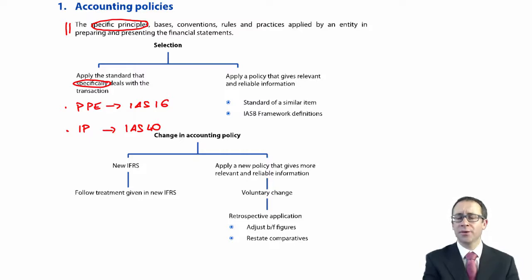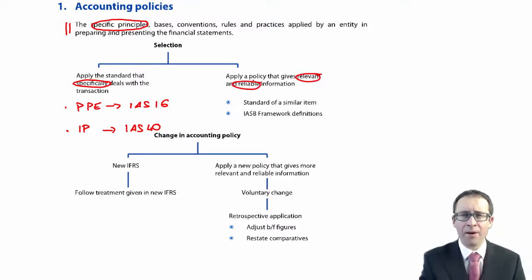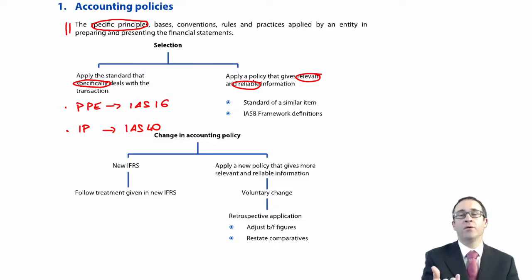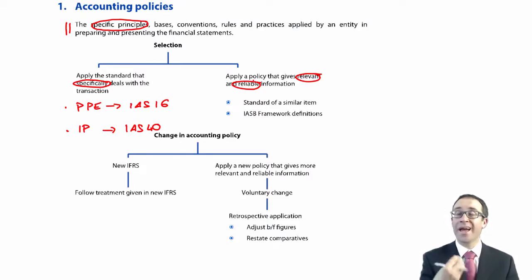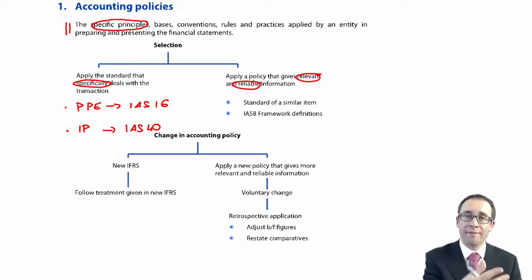If there is no specific standard — which, as we said in the framework chapter, is very, very rare — you should select the policy that gives relevant and reliable information. Remember, we've seen the word 'relevant' in the framework as one of the fundamental qualitative characteristics. Things are reliable if we focus on the substance and economic reality as part of faithful representation. So even IAS 8 takes the specifics and applies them to the general framework.